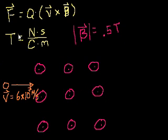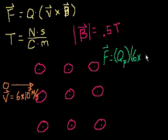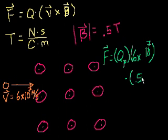Let's figure out the magnitude first. The charge on a proton — we don't know it right now, but a TI graphing calculator has it stored. So the magnitude of the force on the particle is equal to the charge of a proton (q sub p) times the magnitude of the velocity, 6 times 10 to the seventh meters per second, times the magnitude of the magnetic field, 0.5 teslas, times the sine of the angle between them.